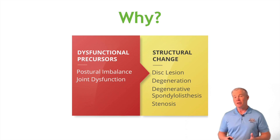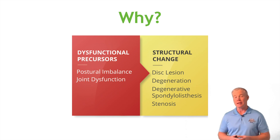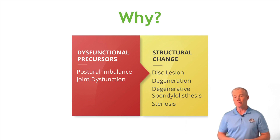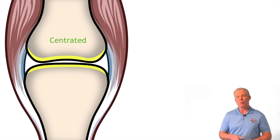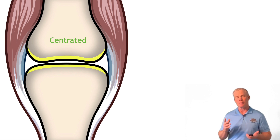The dysfunctional precursors — things like joint degeneration, which you and I are really good at identifying — and the postural imbalances: what things were decentrating the joint. Remember, centration is a joint having its optimal surface relationship throughout its range of motion.